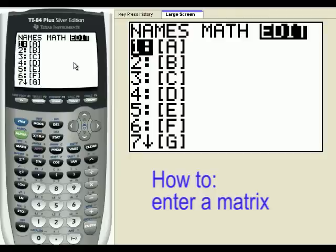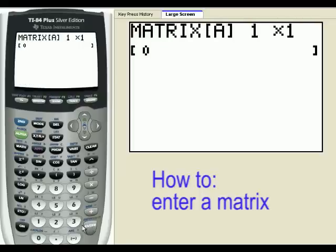So here's where we want to start. We're going to edit matrix A. By default, matrices are one by one in the calculator. So I'm going to change this to a two by two matrix by going two, enter, two, enter.